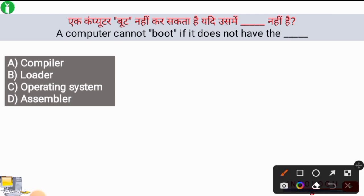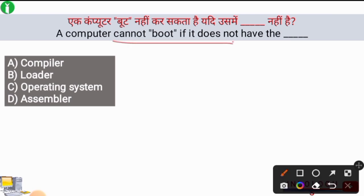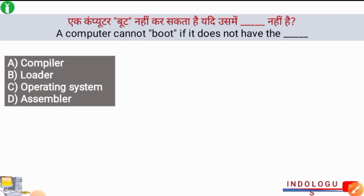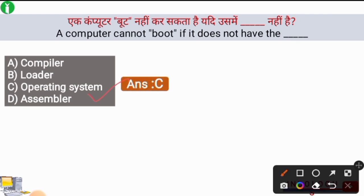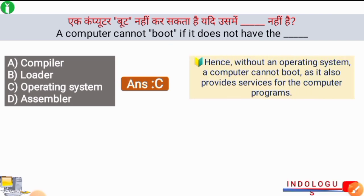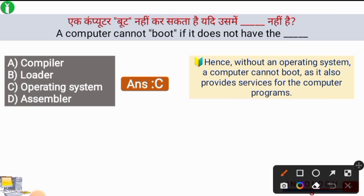Next question: A computer cannot boot if it does not have the correct what? The answer is option C, operating system. If a computer does not have an operating system, then it cannot boot. Without an operating system, a computer cannot boot as the OS provides services for the computer programs.